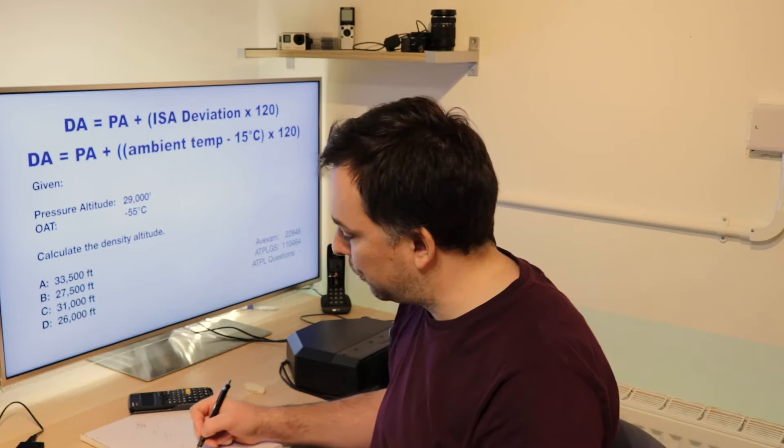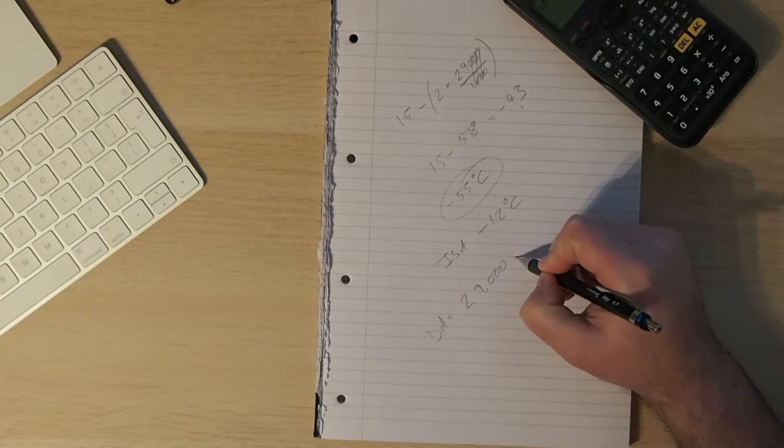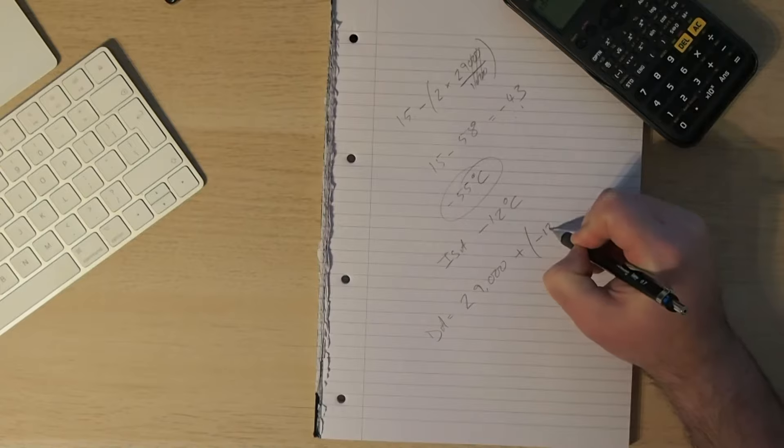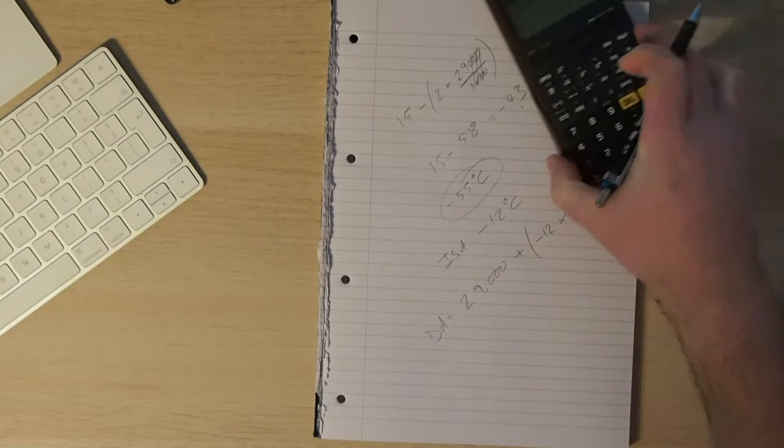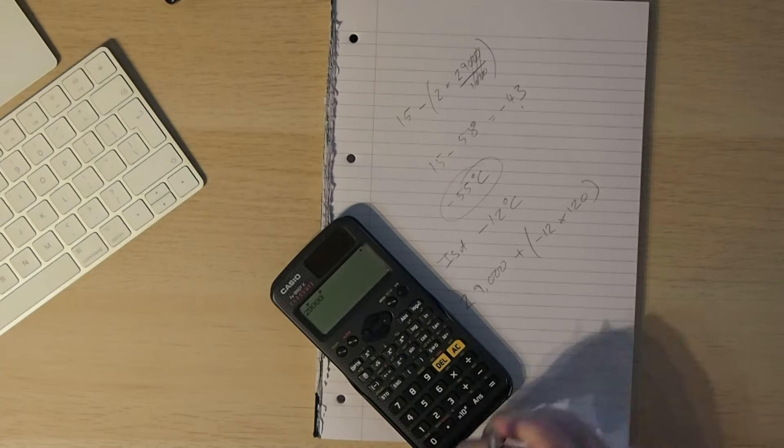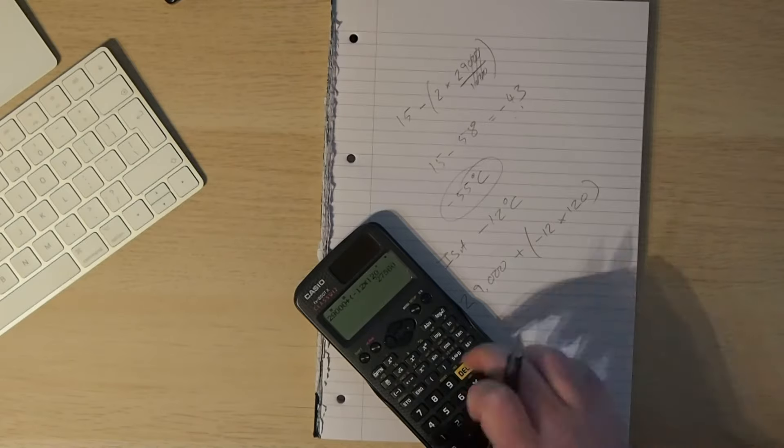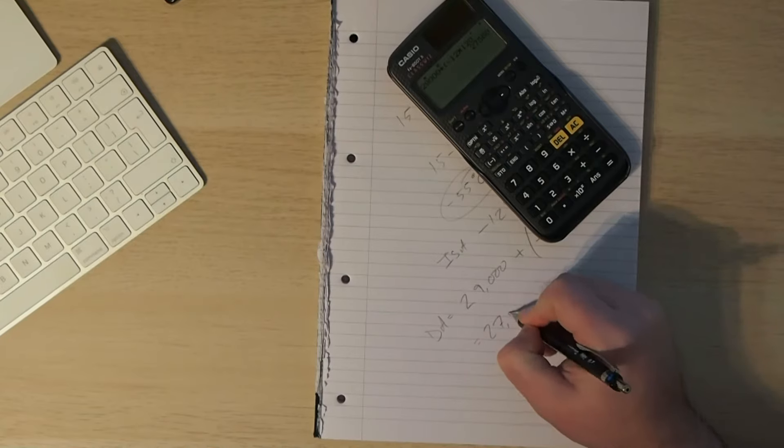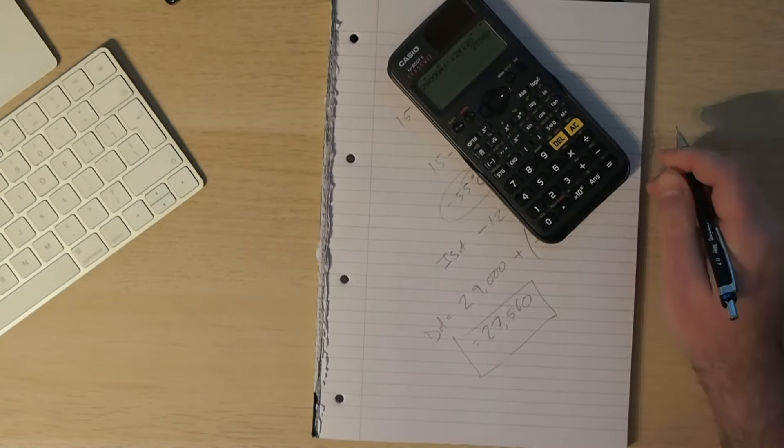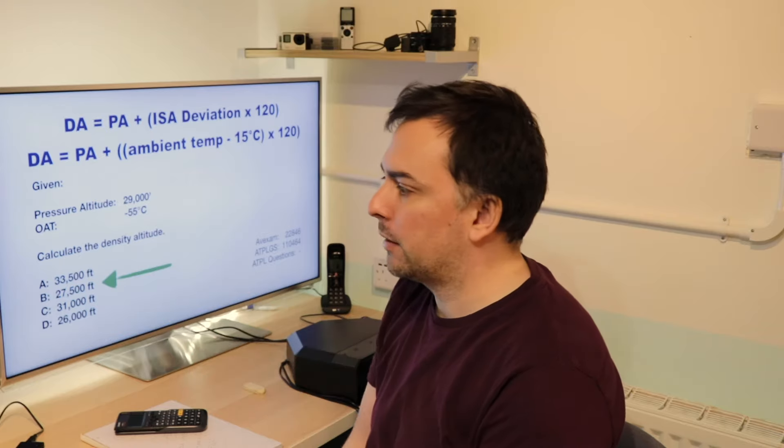So plugging that into our density altitude formula, DA equals 29,000 feet plus our ISA deviation, which is minus 12 times 120. So let's do that on the calculator. Just make sure to include the brackets. 29,000 plus minus 12 times 120. And the answer comes out 27,560. So I'm going to go with option B of the ones that are available to us. And that's correct.